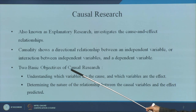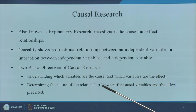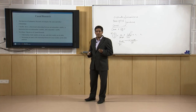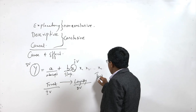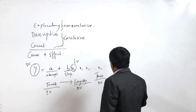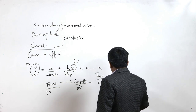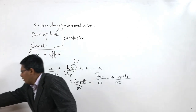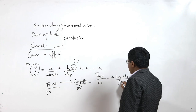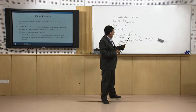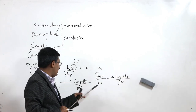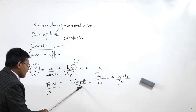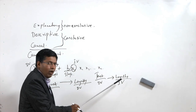Two basic objectives of causal research: first, to understand which variables are the cause and which are the effect — which is my dependent variable. It is not the vice versa. Trust will not get affected by loyalty. Loyalty changes because of trust, not the other way around.